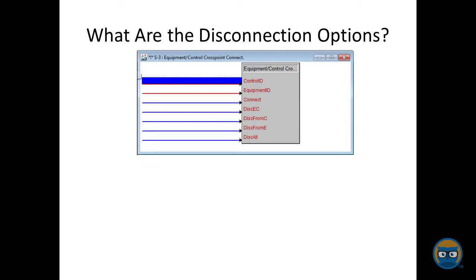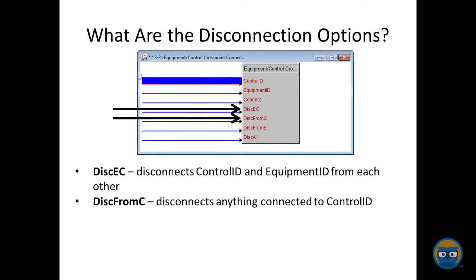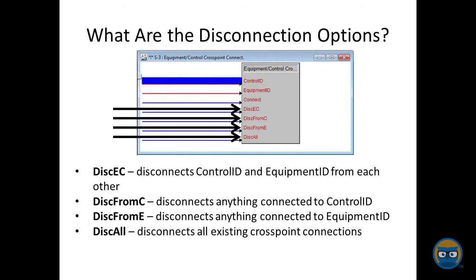The options for disconnecting are: first, you can disconnect a specific controller from a specific equipment; you can disconnect all equipment connected to a specific controller; you can disconnect all controllers connected to a specific equipment; and the last option, you can disconnect all of the crosspoint symbols defined in your program.